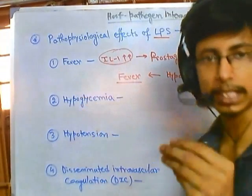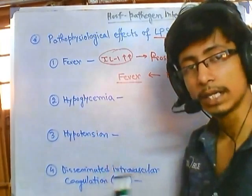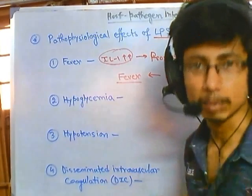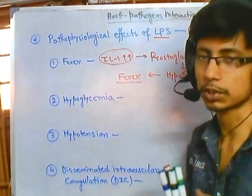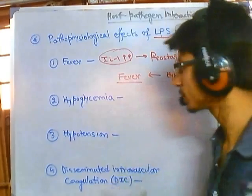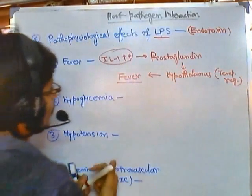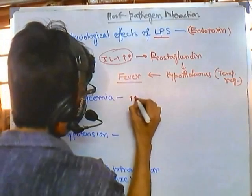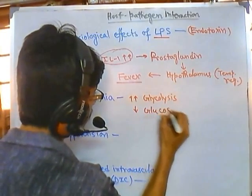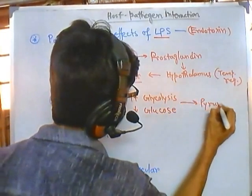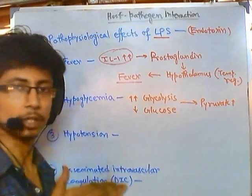The second effect is hypoglycemia. The presence of LPS in the body forces cells to take up more glucose and metabolize it faster into pyruvate via glycolysis. As the rate of glycolysis increases, the total glucose content of the body falls. Hypo means less, so glycemia refers to blood glucose — the sugar falls due to increasing glycolysis as glucose is rapidly metabolized into pyruvate.